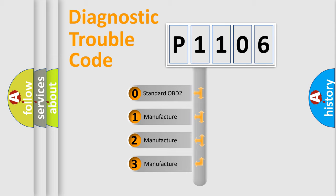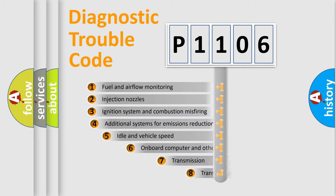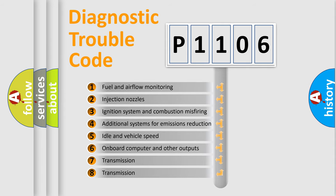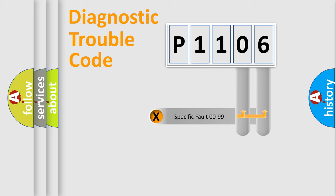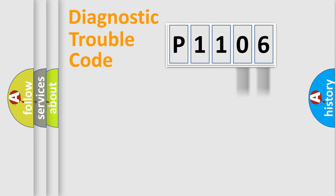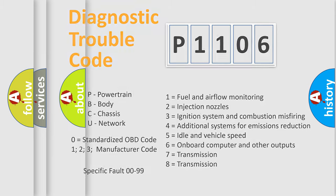If the second character is expressed as zero, it is a standardized error. In the case of numbers 1, 2, or 3, it is a more specific expression of a car-specific error. The third character specifies a subset of errors. This distribution is valid only for the standardized DTC code, where only the last two characters define the specific fault of the group — and only when the second character is expressed by the number zero.